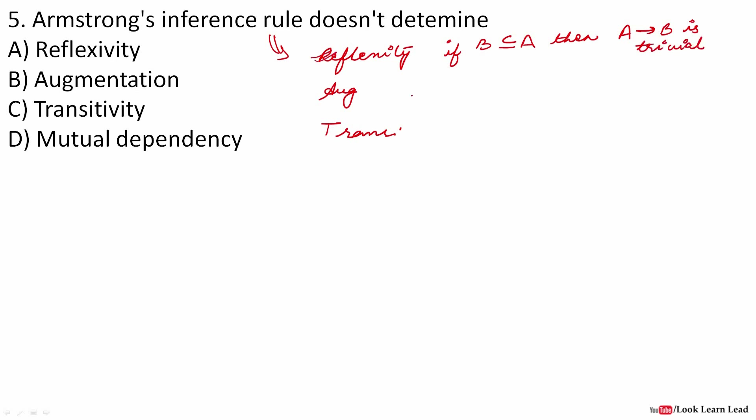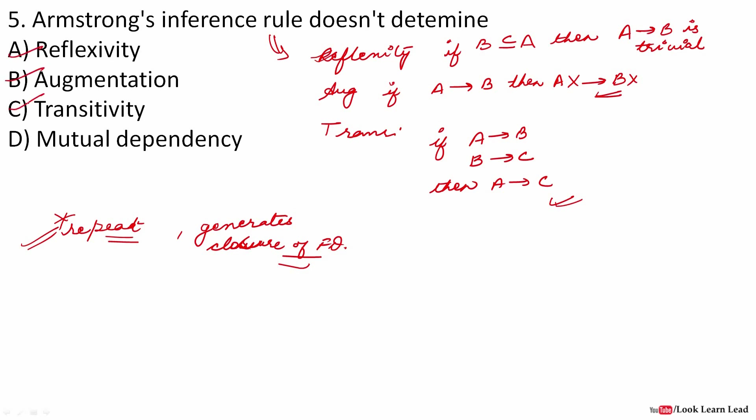What is transitivity? If A implies B and B implies C, then A implies C. This is transitivity. When the Armstrong inference rules are applied repeatedly, it generates closure of functional dependencies. You have to remember it generates closure of the dependencies. It is reflexivity, augmentation, and transitivity. So which does not determine? Mutual dependency. The answer is mutual dependency.